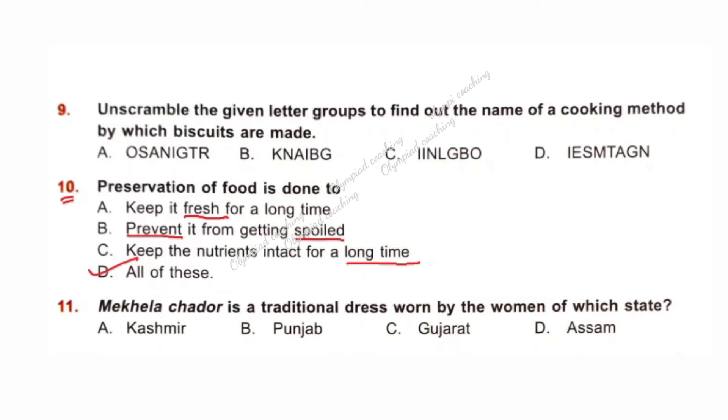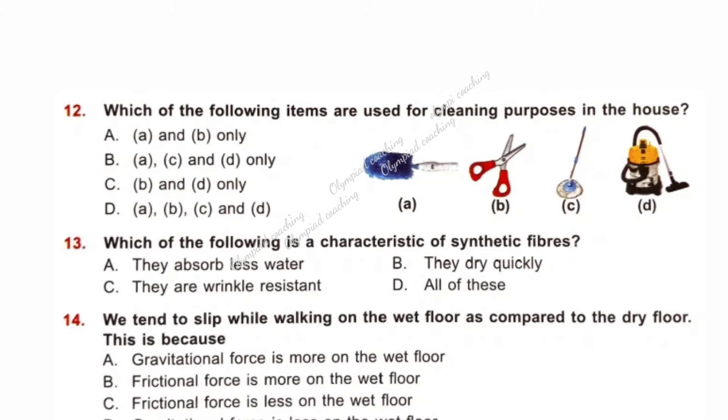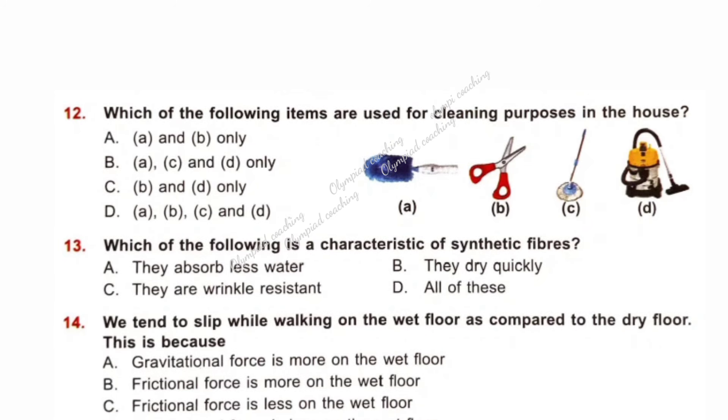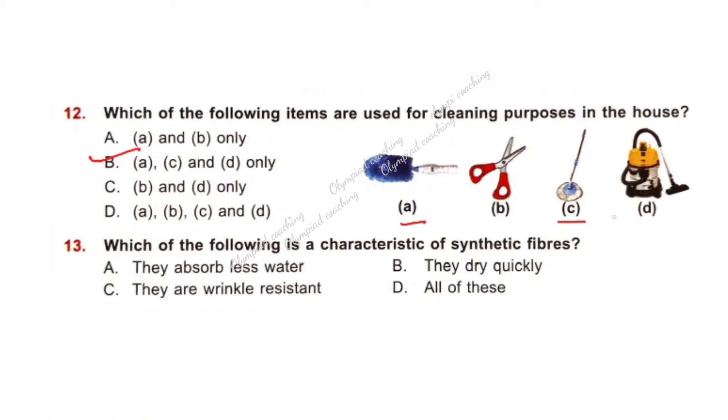Question number 11. Mekhela chadar is a traditional dress worn by the women of which state? Correct answer is Option D, Assam. Question number 12. Which of the following items are used for cleaning purposes in the house? Option B is correct: A, C and D. Whereas, B which is a scissor, it is used for cutting purposes.